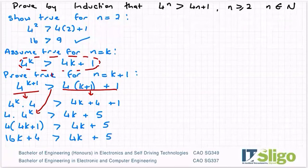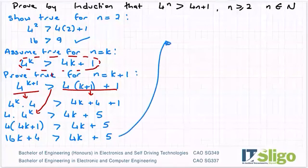And it's kind of clear that it is, but let's bring all to one side. So I'll have 16k plus 4 minus 4k minus 5 is that greater than 0.